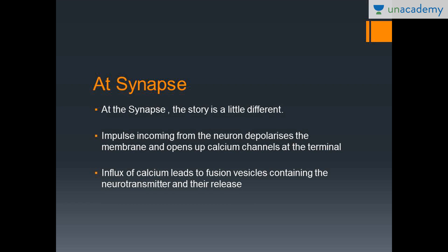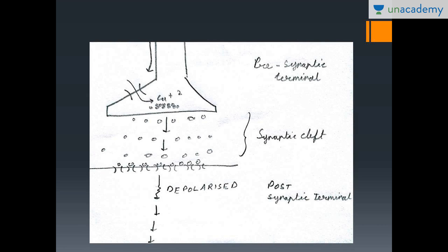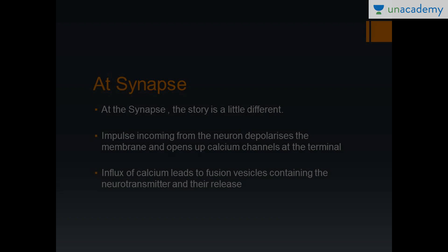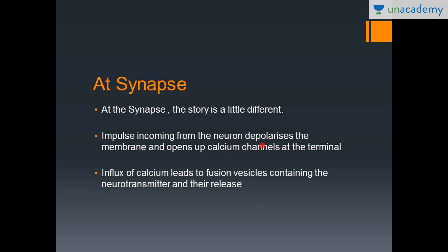At the synapse the story is different. When the impulse arrives at the presynaptic terminal, depolarization opens calcium channels, and calcium moves into the cell. This calcium causes synaptic vesicles to fuse with the membrane and release neurotransmitters, which then act on the postsynaptic dendrite and depolarize it. So at the synapse, calcium channel opening due to depolarization leads to vesicle fusion and neurotransmitter release.